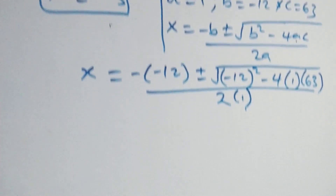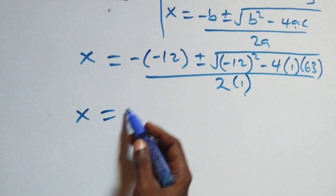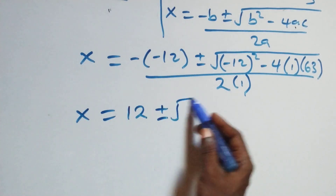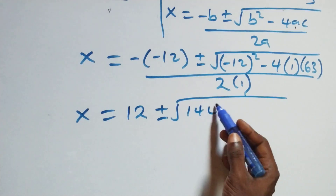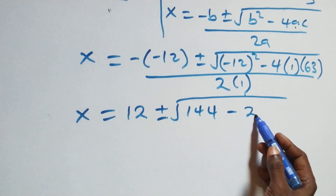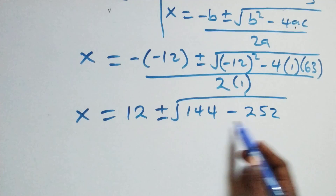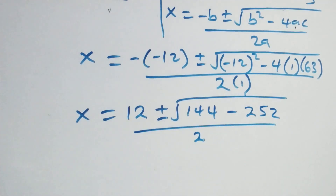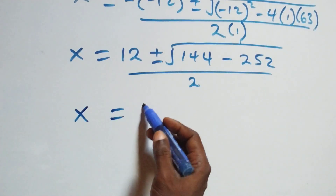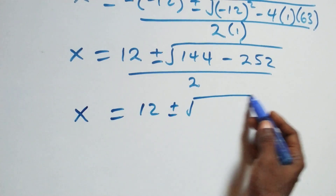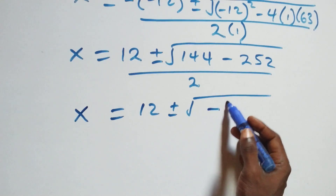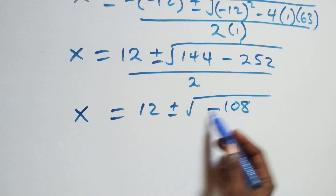This gives x equals 12 plus or minus square root of 144 minus 252, all over 2. That is x equals 12 plus or minus square root of minus 108, all over 2.